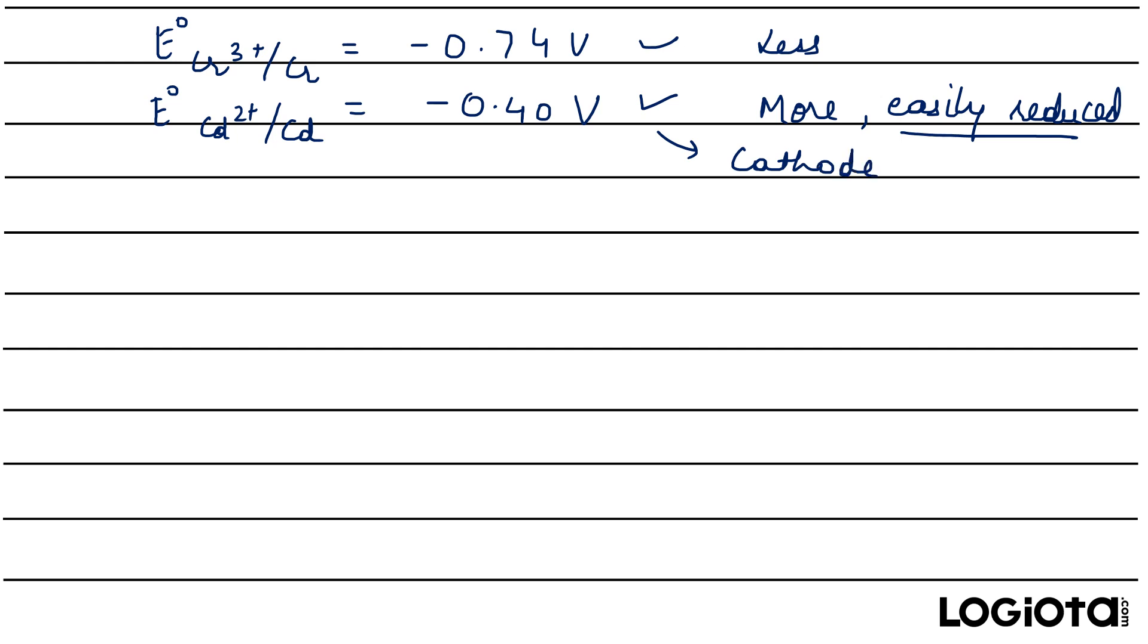So if it has more reduction potential then it means it's a cathode and if it has less reduction potential then it means it is an anode.